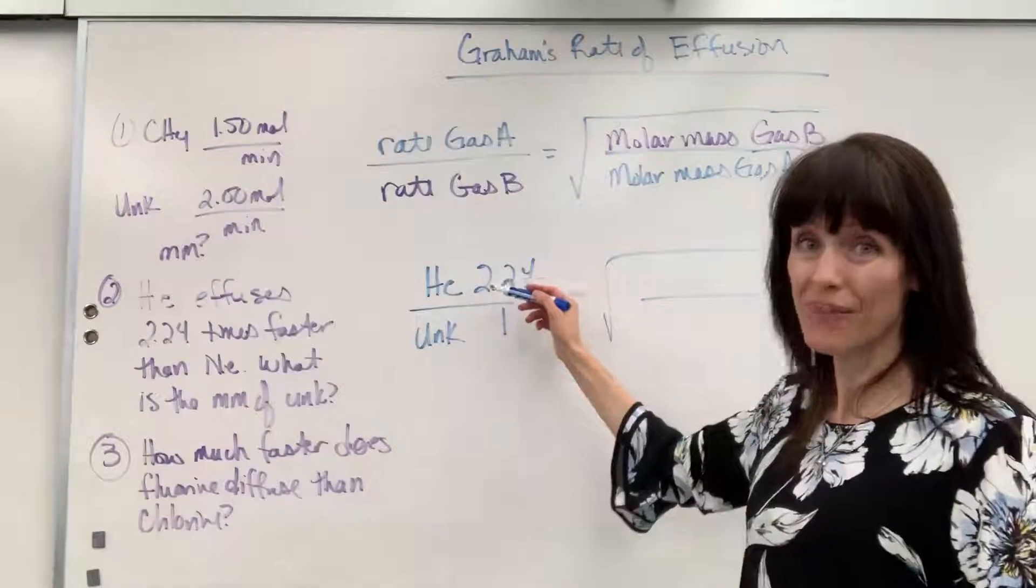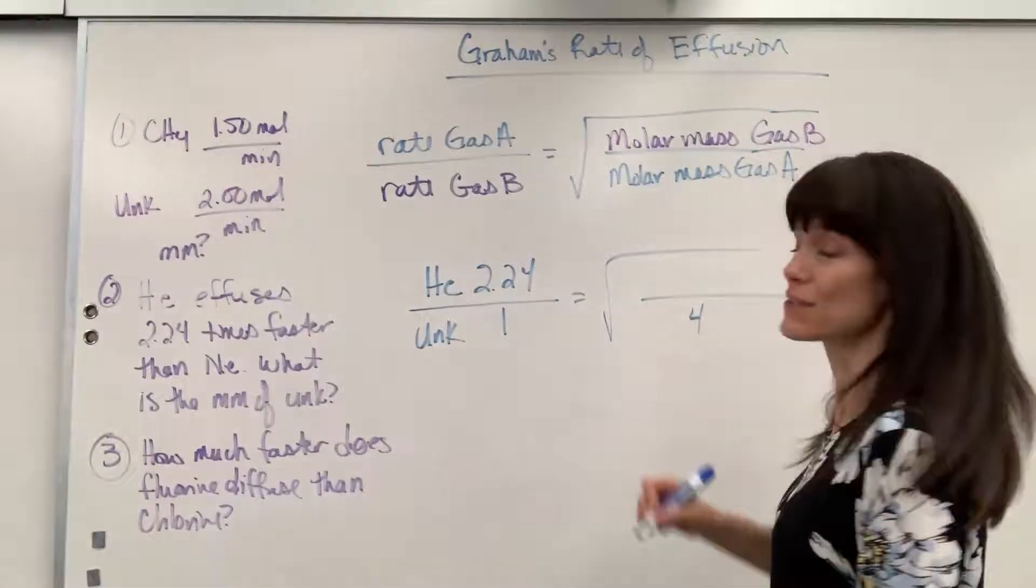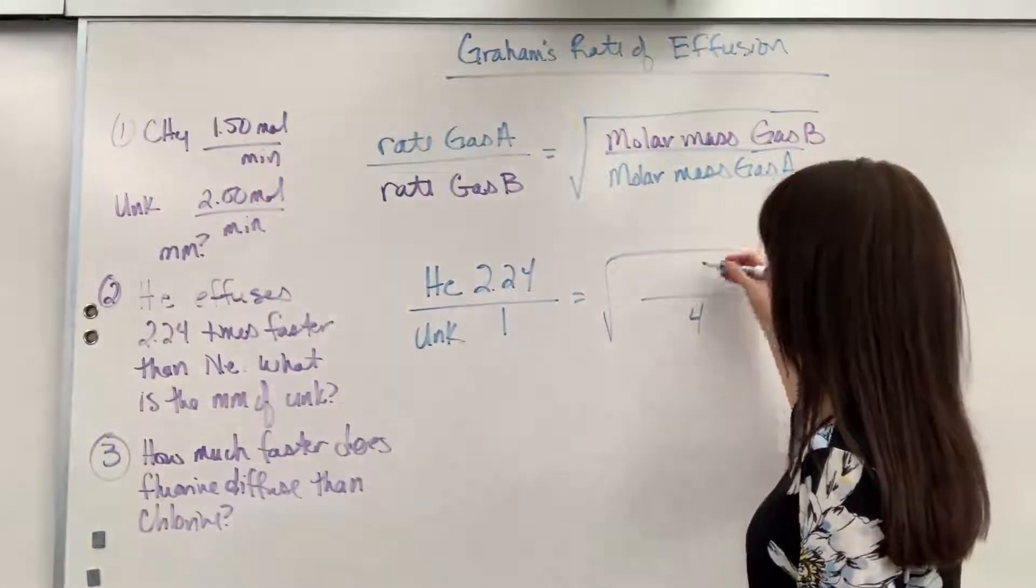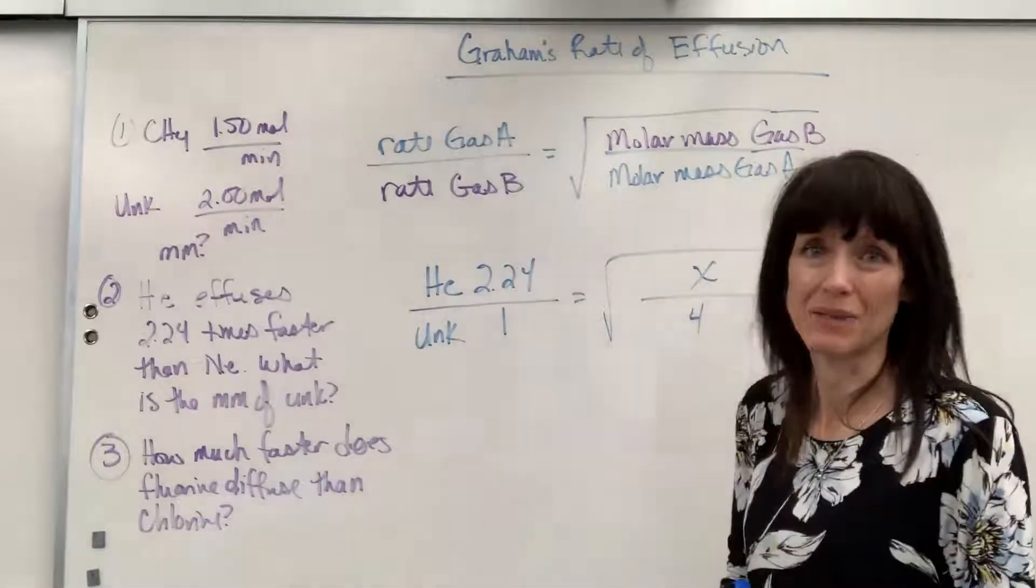So, equals, it's going to be the molar mass of each. The molar mass of helium, I know that from the periodic table, it's 4. And notice, I put it on the opposite side. I'm looking for the molar mass of the unknown, so that's going to be my x.